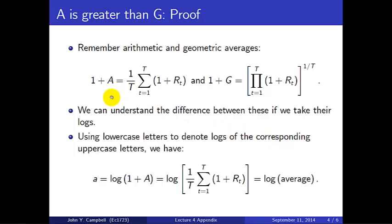So what's the proof that A is always greater than G? Well, the gross arithmetic average return is this average, and the gross geometric is this product. Notice that we're summing up here and we're multiplying here for the geometric average.